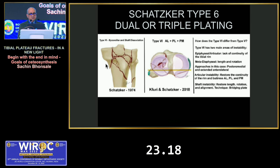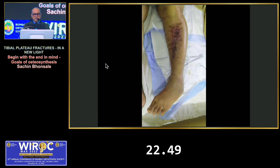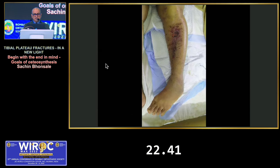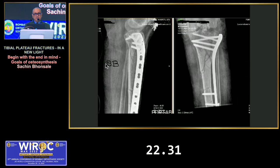Schatzker type 6 fractures may require two plates medially and one plate laterally. The difference between 5 and 6 is that type 6 has two main areas of instability: the tibial plateau and the metaphyseal-diaphyseal junction — both must be addressed. One case involved a nasty fracture in an elderly lady with Parkinson's who developed blisters before the fracture was noticed. A spanning fixator was applied initially with two K-wires to restore articular congruity; after a month, a lateral locking plate was placed without bone graft.